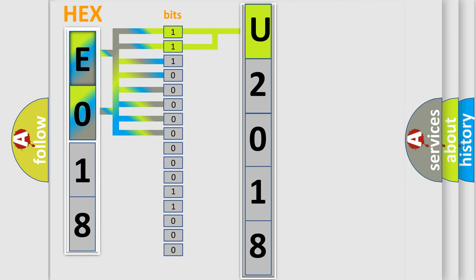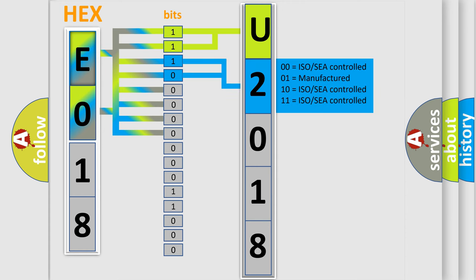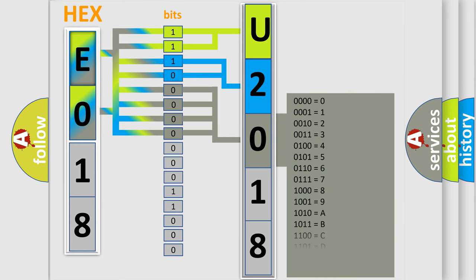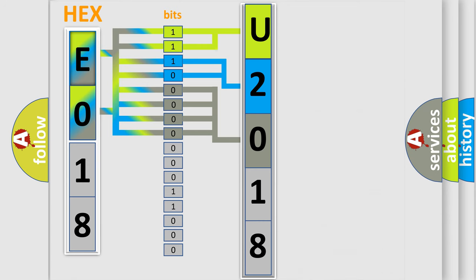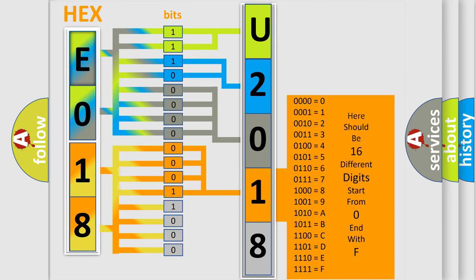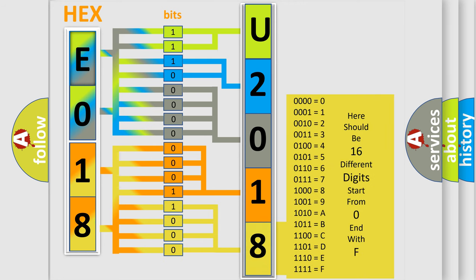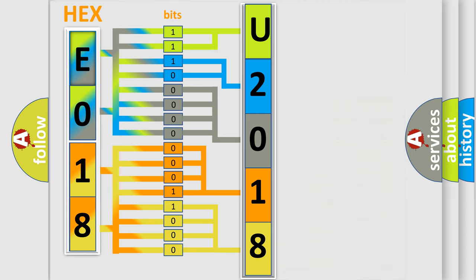The next two bits determine the second character. The last bits of the first byte define the third character of the code. The second byte is composed of a combination of eight bits. The first four bits determine the fourth character of the code, and the combination of the last four bits defines the fifth character. A single byte conceals 256 possible combinations.